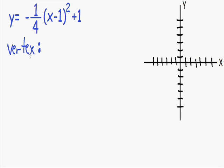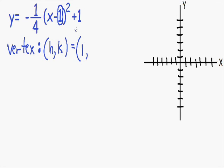Let's find our vertex. We have x minus one squared. Our vertex is written in the form (h, k), where h is the x-coordinate and k is the y-coordinate. Our h is the number next to x — since that number is one, our h is also one, but with the opposite sign, so since it appears as negative one it becomes positive one. Our k is exactly the same as the number outside the parentheses, so since that number is positive one, our k is also positive one.